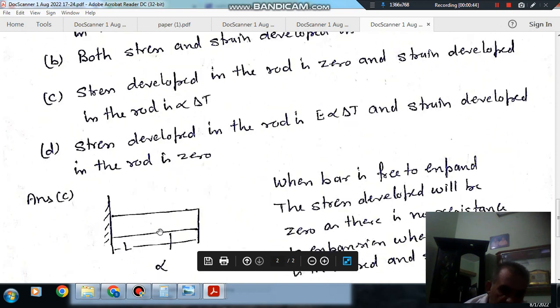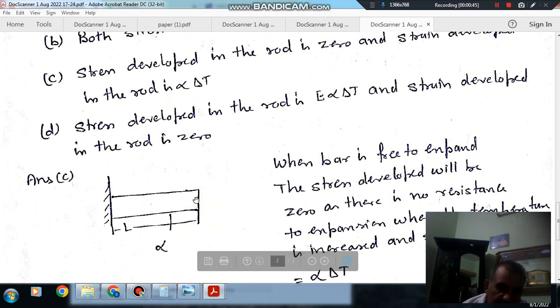This is a bar of length L with alpha as the coefficient of thermal expansion. When the temperature is increased, there will be an increase in length if it is free to extend.